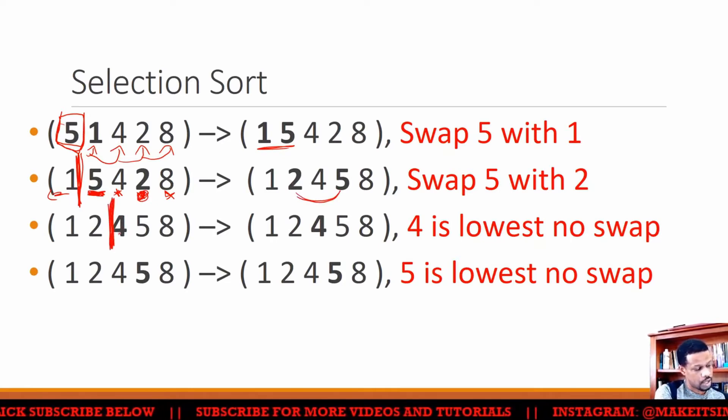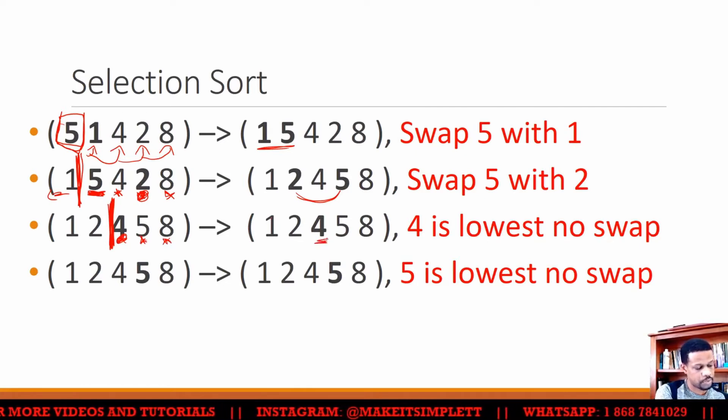After I lock it off, now I'm going to check this 4. So I'm holding this 4 in my pocket and I'm going to check: is the 5 smaller? No. Is the 8 smaller? No. So there is no swap. The 4 stays in place because it's obviously lowest. So then I'm going to push up now.